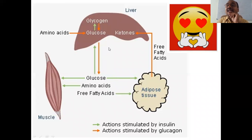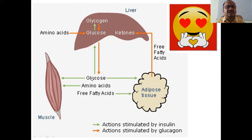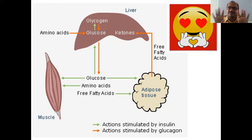In this important diagram, the orange color represents actions stimulated by glucagon, and the ash color represents actions stimulated by insulin — they are opposites. The three organs shown are liver, muscle, and adipose tissue. The food items are divided into three categories: carbohydrates (glucose), amino acids (proteins), and fatty acids (fats). The diagram shows how these are manipulated by insulin and glucagon.